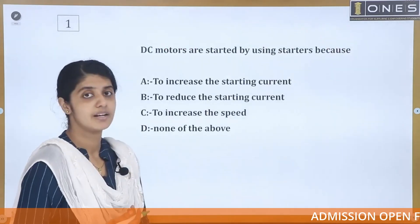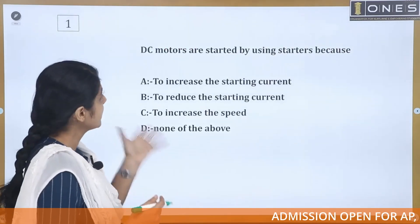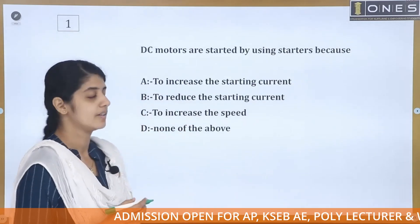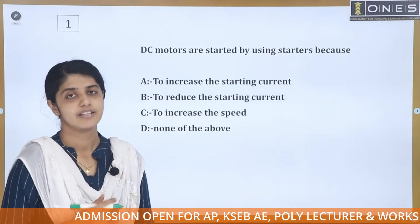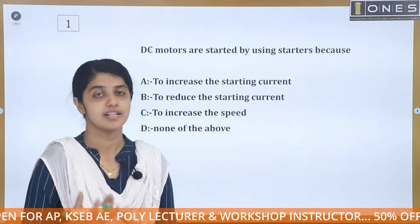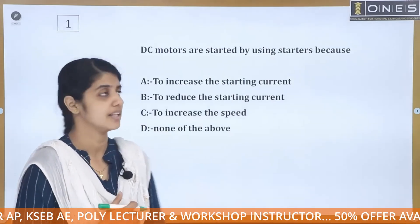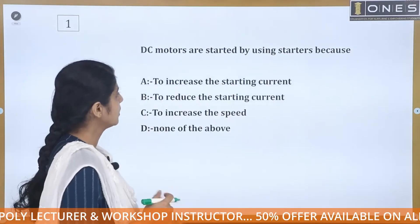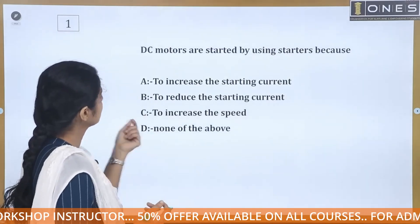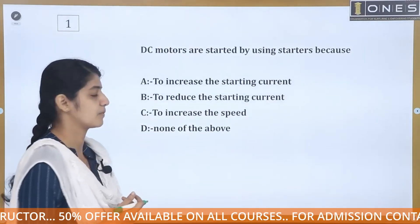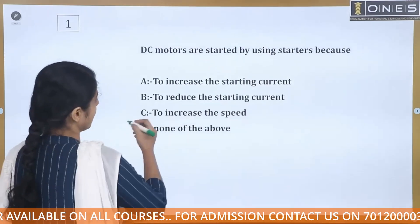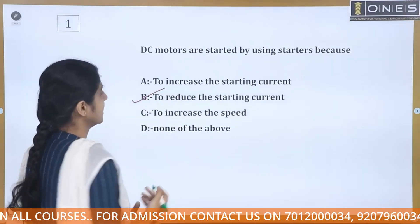First question: DC motors are started by using starters. Because DC motors are started by direct starting, the options are: to increase the starting current, to reduce the starting current, to increase the speed, or none of the above. The answer is to reduce the starting current.